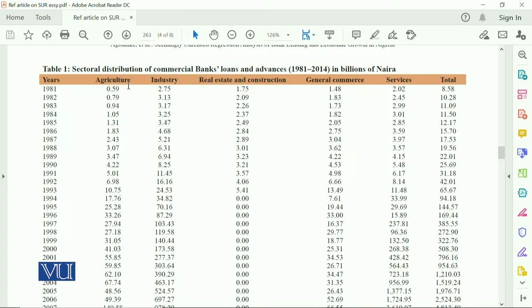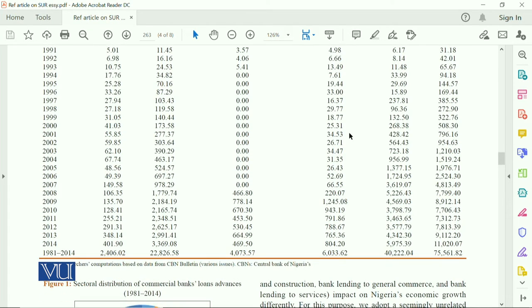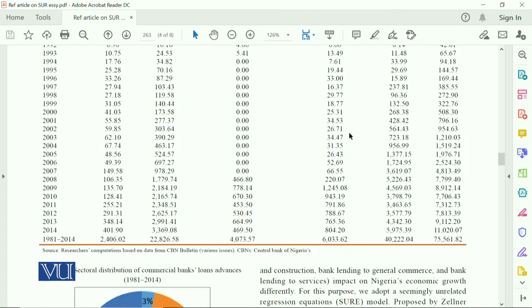There is commercial banks loan and advances for the agriculture sector, in the second column for the industry, for real estate, for general commerce, for services. These are five sectors, and from the five sectors, from 1981 to 2014, they have data.